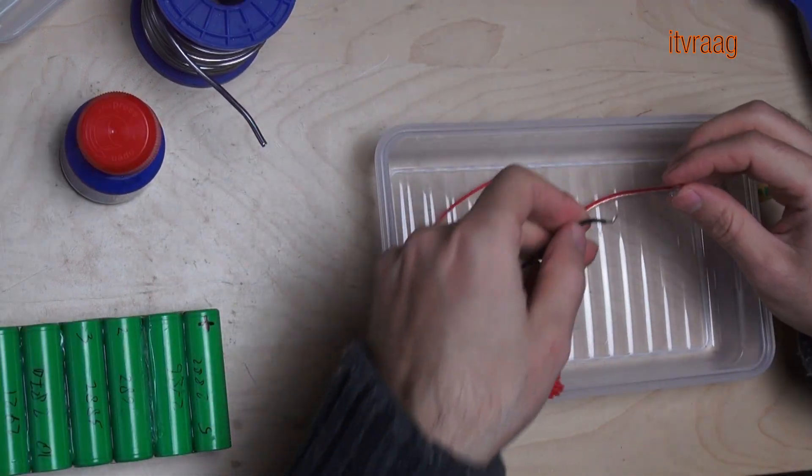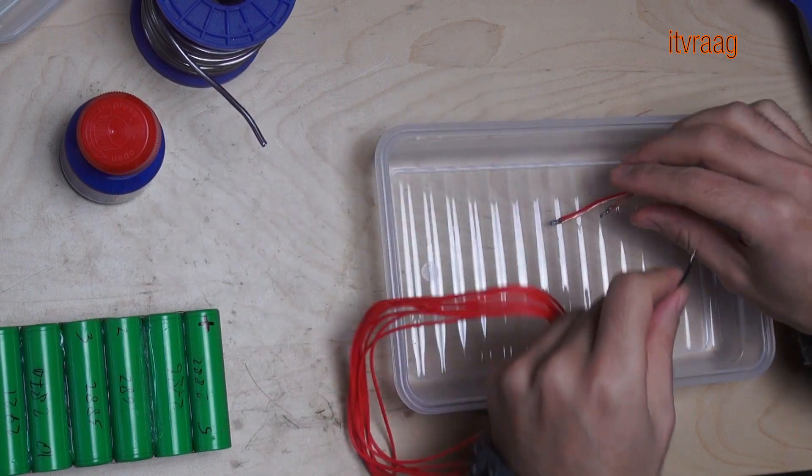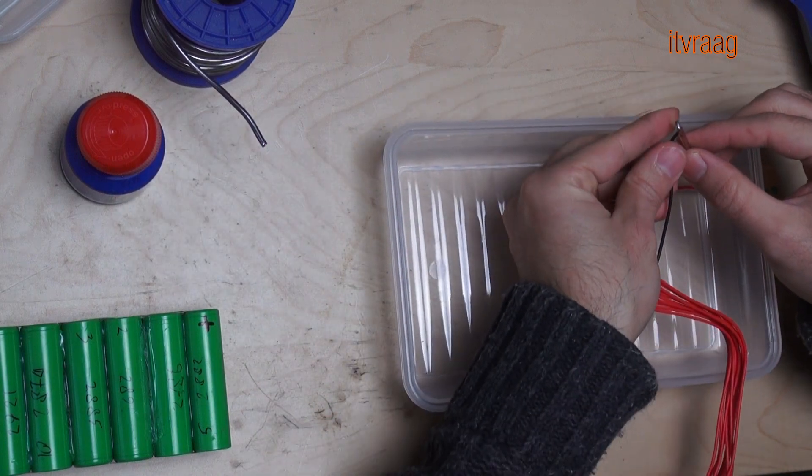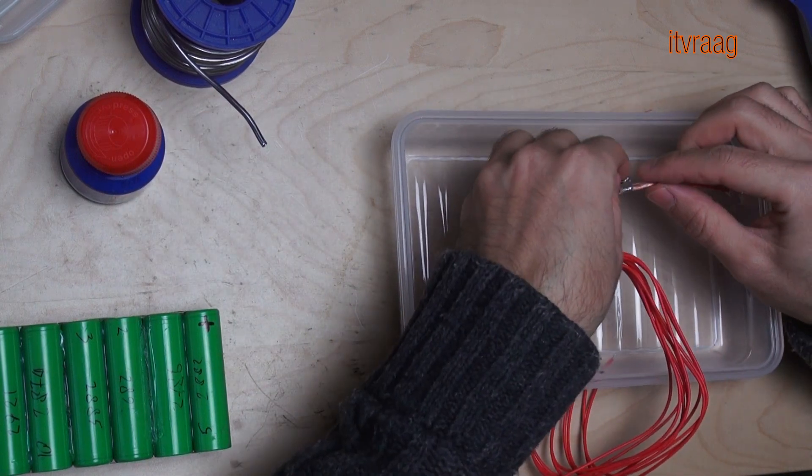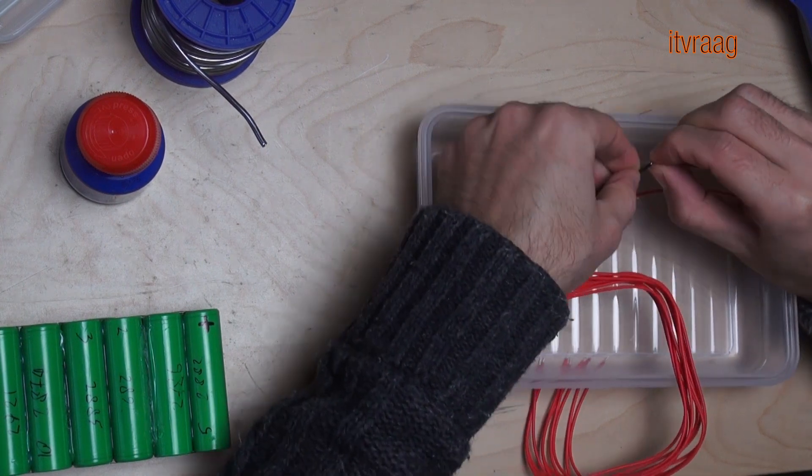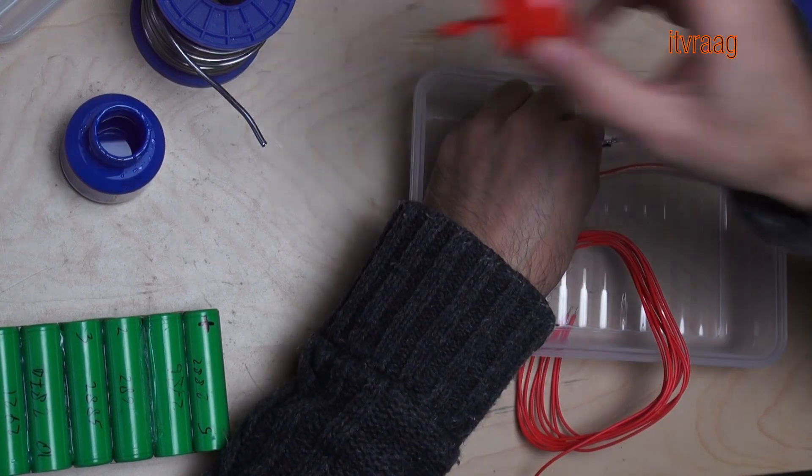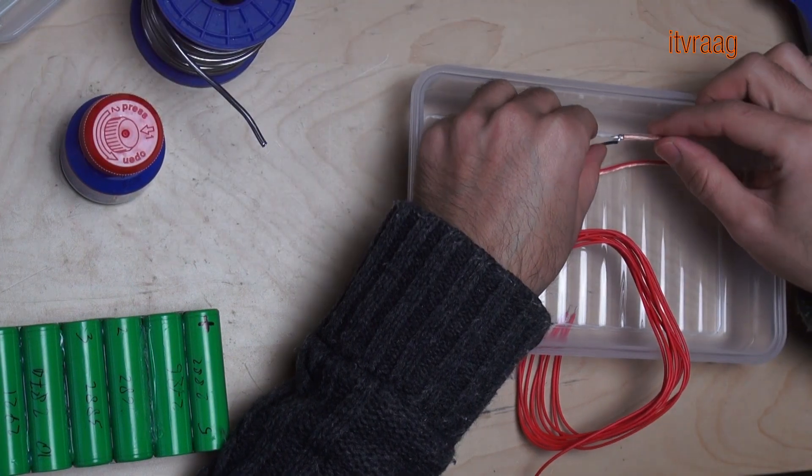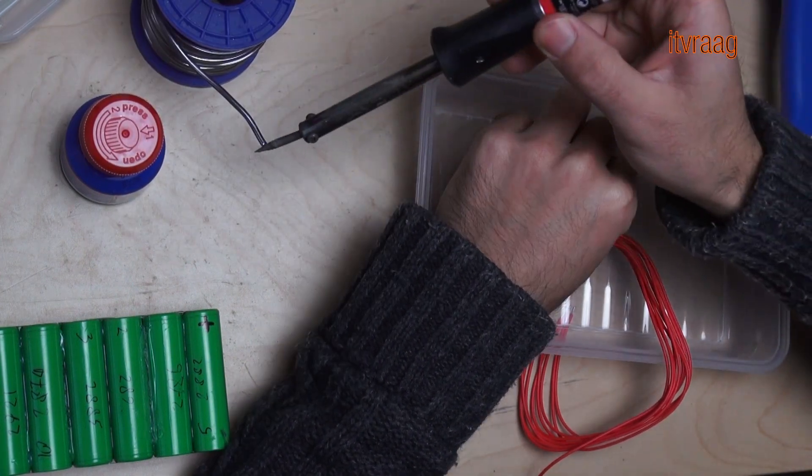Here I decided to solder the negative on the lead cable to the negative on the output connection. But you should see for yourself in which order you want to connect the cables. Because you want to work safely and not cause any short circuit while working. If you want to know more about lead cables, then watch my video about this.